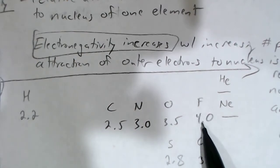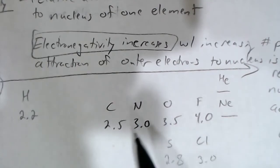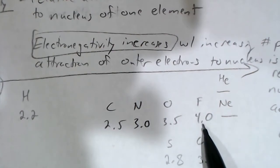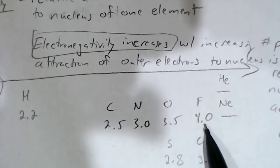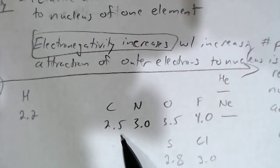Fluorine is the most electronegative element. If it has a bond to, say, carbon, the electrons in the bond will be pulled more towards fluorine since it has a higher electronegativity. Fluorine will end up getting a partial negative charge as it pulls those negative electrons towards it, and carbon will get a partial positive charge. All this results in polarity, which we'll learn about in a couple of weeks.